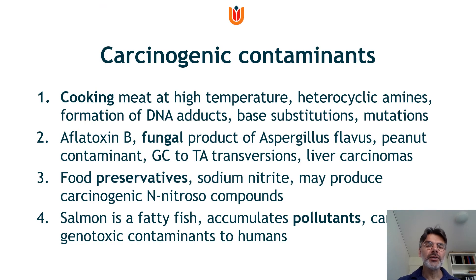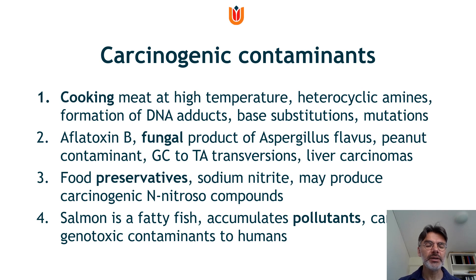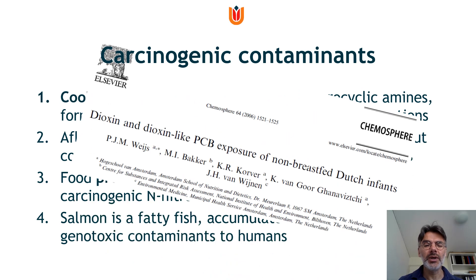Other examples of carcinogenic compounds include: cooking meat at high temperatures, aflatoxin B — a fungal product that can contaminate peanuts, food preservatives like sodium nitrite, and salmon — a fatty fish that accumulates pollutants like dioxin over the years, which is a genotoxic contaminant to humans. Dioxin is normally present in our environment and therefore also in everything we eat, including baby food.